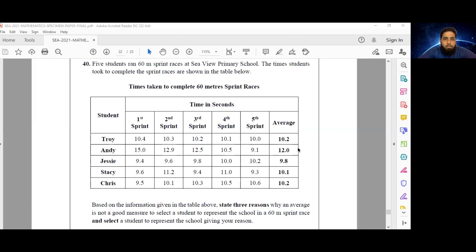So here we have number 40, which is a statistics question. Five students ran 60-meter sprint races at Seaview Primary School. The time students took to complete the sprint races is shown in the table below.